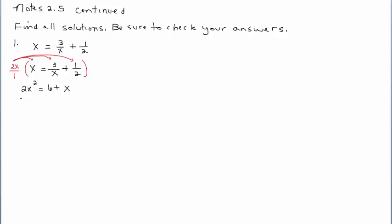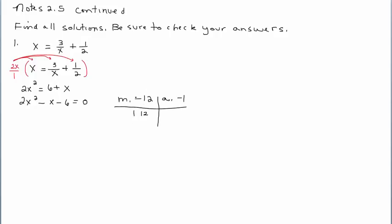Now we get to solve this quadratic equation. I'm going to solve for 0. Completing the square is out because the coefficient is not 1, and extracting square roots is out because I have a linear term. It looks like it's either factoring or the quadratic formula. Since a is not 1, I'll do my multiply-add chart to help me factor by grouping. a times c is negative 12, and I want factors of negative 12 that add to negative 1. Factors of 12 are: 1 and 12, 2 and 6, and 3 and 4.